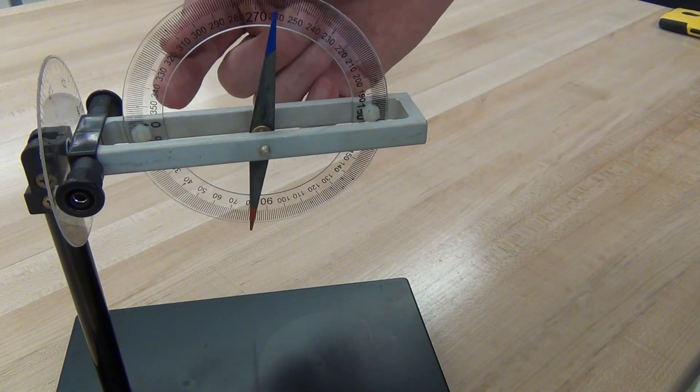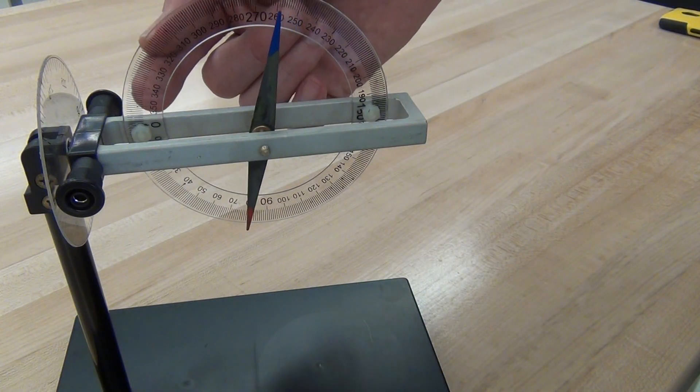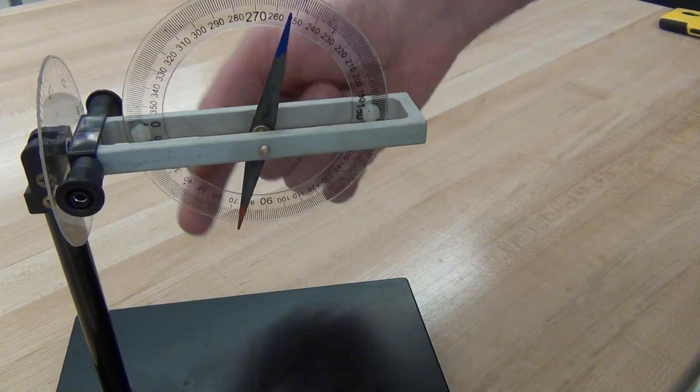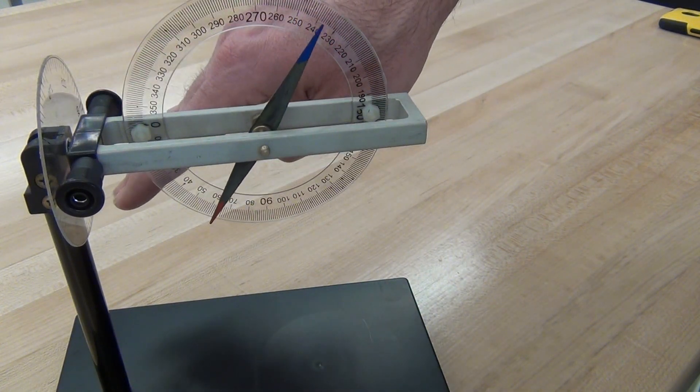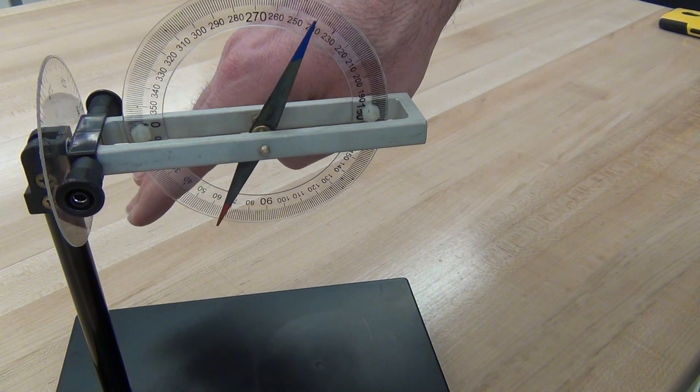The dip angle is defined from negative 90 to positive 90, with positive dip being a measure below the horizontal.